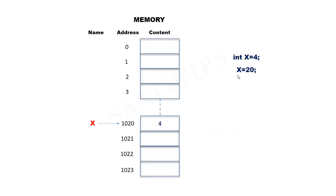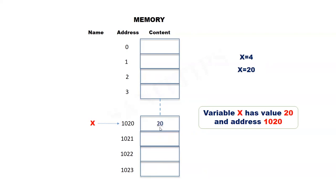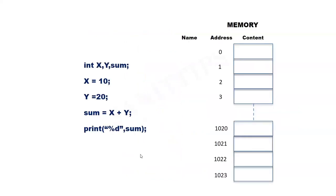If we execute the statement x equal to 20 after the previous statement, the value of x will be updated to 20. Now we can say that the variable x has address 1020 and value 20.